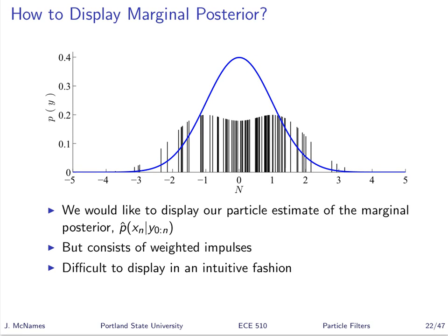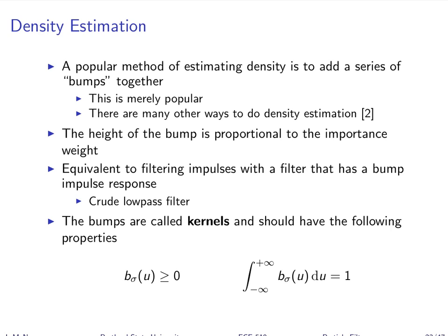We have a particle estimate of the posterior as a weighted sum of impulses — each impulse has a different area represented by its weight. Showing a pseudo-colored image of impulses is hard to do. I can sort of do it in one dimension, but if I tried to show this as an image, it would be a problem knowing how to show where an impulse was and how high it was. It turns out there's a straightforward way to handle this.